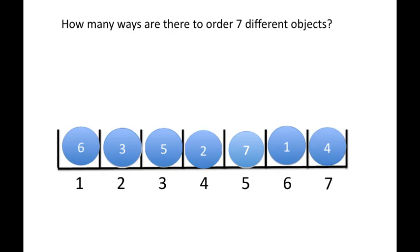So how many possibilities overall did we get? We had, for the first one, 7. Then for the second one, 6. Then for the next one, 5, 4, 3, 2, 1.